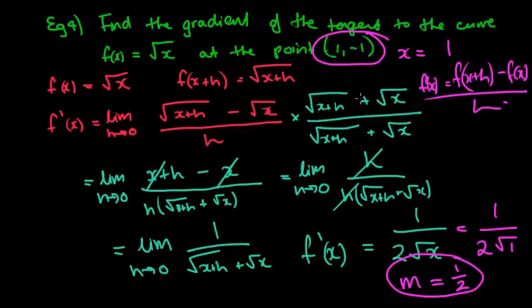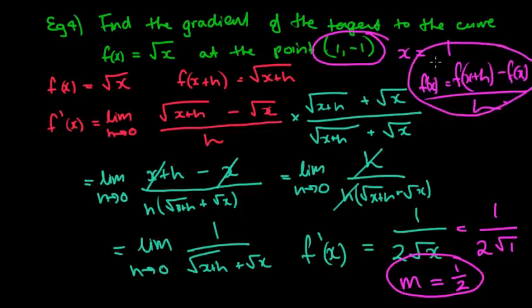Our next lesson we'll be looking at a much quicker way to find the derivative of a function — it is 10 times quicker. However, if the question stipulates that it must be from first principles, then you must use that formula: f dash x equals the limit as h approaches 0 of f of x plus h minus f of x, all over h — our rise over our run. You can't use the shortcut method in that case. Hopefully this made sense. That last question was pretty challenging, but future ones won't be too tough. Have a good day.